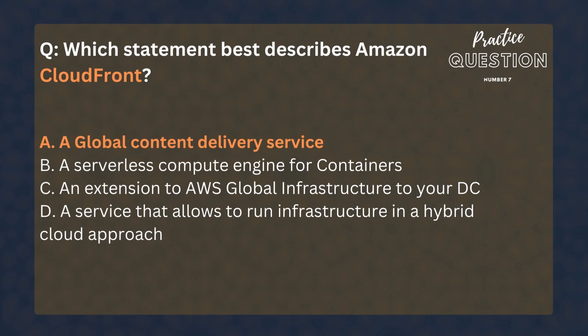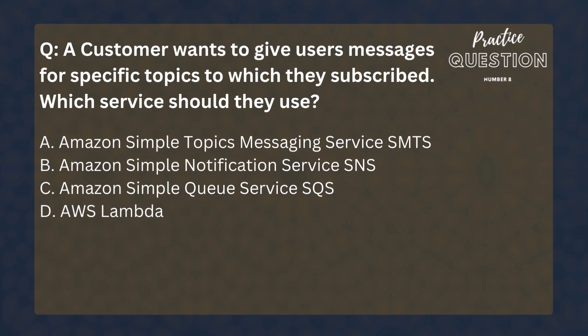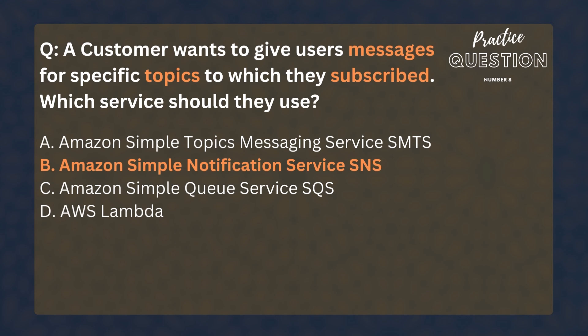A customer wants to give users messages for specific topics to which they subscribed. Which service should they use? Options: Amazon Simple Topics, Amazon Simple Notification Service, Amazon Simple Queue Service, AWS Lambda. There are two main messaging services from AWS — SNS and SQS. This question was describing the mechanism of how SNS works.